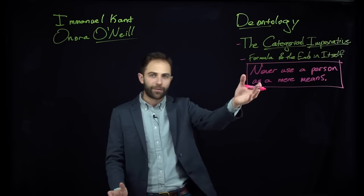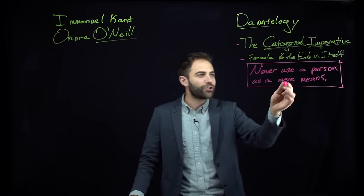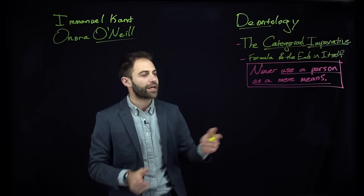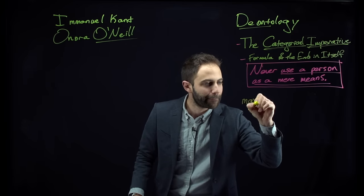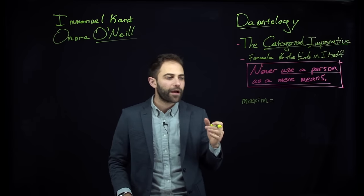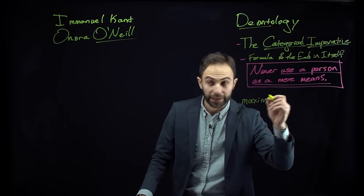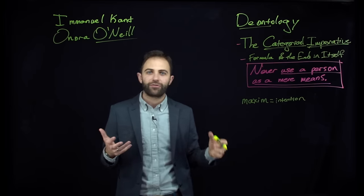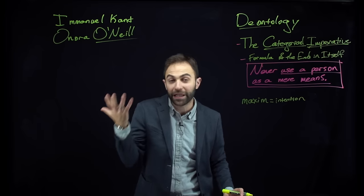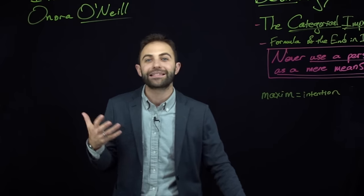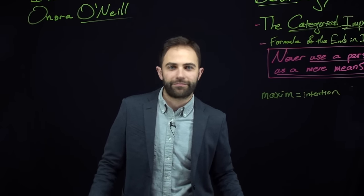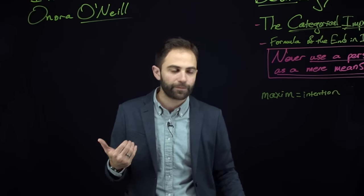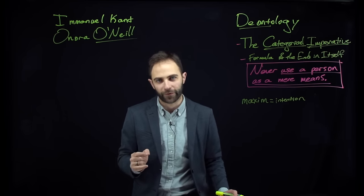What we're going to do right now is unpack this — figure out what it means. What is it to use a person as a mere means? In order to understand this, we're going to need to understand what Kant means by the term maxim. A maxim for Kant, at least according to O'Neill, is a kind of intention. When you intend to do something, that's when you have a little mental plan of what you're going to do. This is an intention-based moral theory.